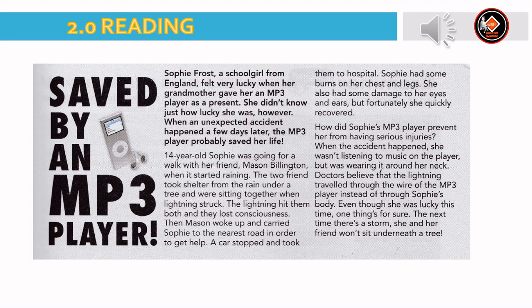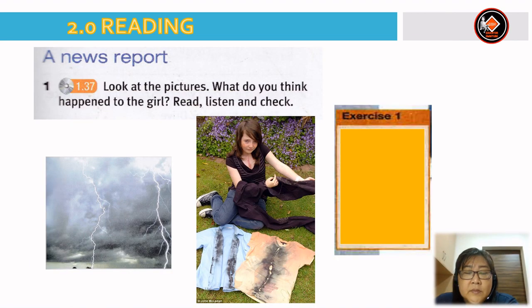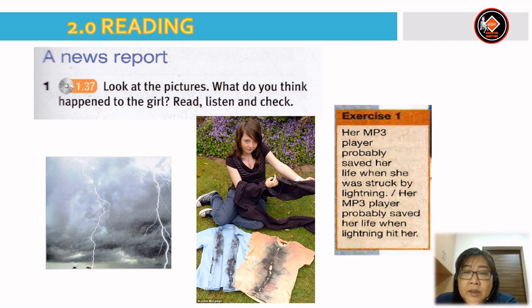How did Sophie's MP3 player prevent her from having serious injuries? When the accident happened, she wasn't listening to music, but was wearing it around her neck. Doctors believe that the lightning travelled through the wire of the MP3 player instead of through Sophie's body. Even though she was lucky this time, the next time there's a storm, she and her boyfriend won't sit underneath a tree. Did you know? Lightning can travel at 150,000 kilometres per second. After reading and listening to the news report: her MP3 player probably saved her life when lightning hit her.